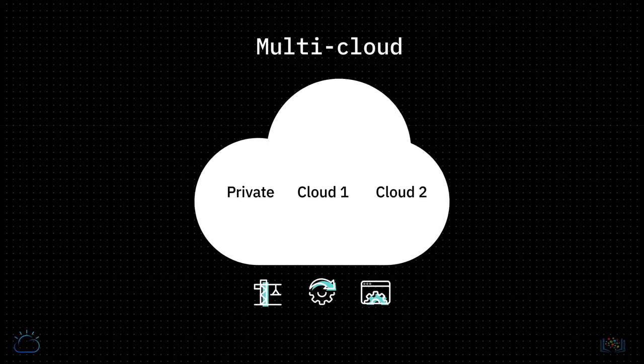So essentially, a hybrid multi-cloud implies you are able to leverage the best of cloud models and services across different service providers, and have your applications and workloads working seamlessly across multiple different clouds. In this video, we will touch on a few use cases for why a business may want to use hybrid or multi-cloud.